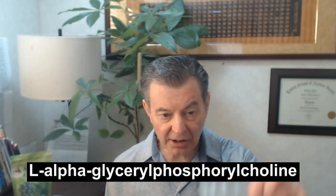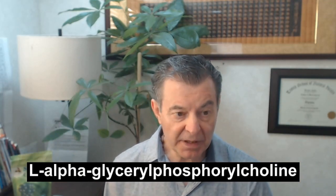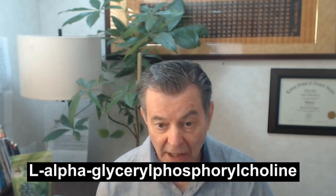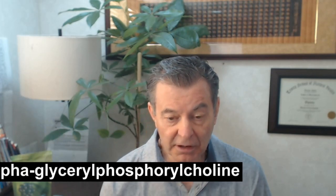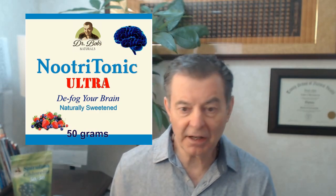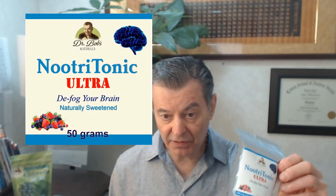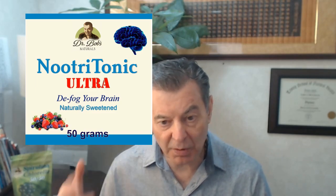So what I take is this product, which is my Nutritonic Ultra, and that's got alpha-GPC. It's alpha, and then glycerophosphocholine. That's a big, long word. So they just call it GPC. So it's like another one that's in here is PS, phosphatidylserine. Okay, so these are the things that feed the brain.